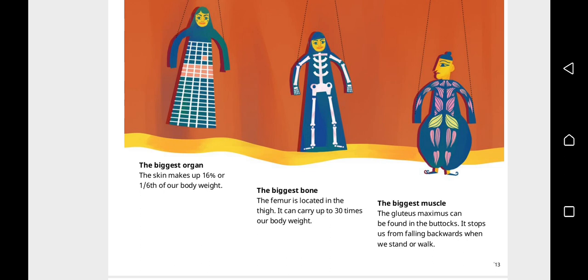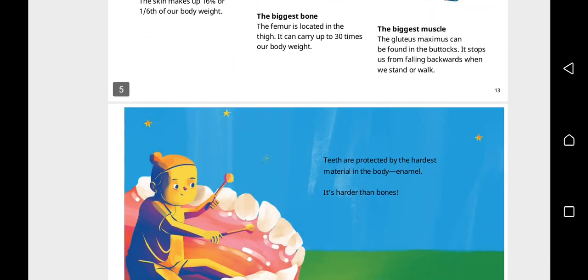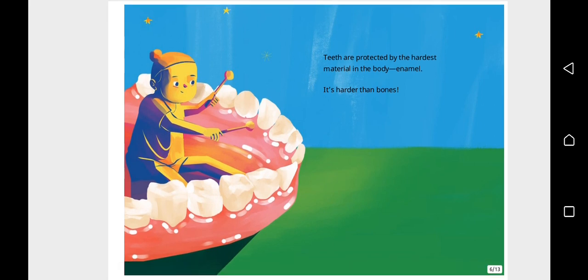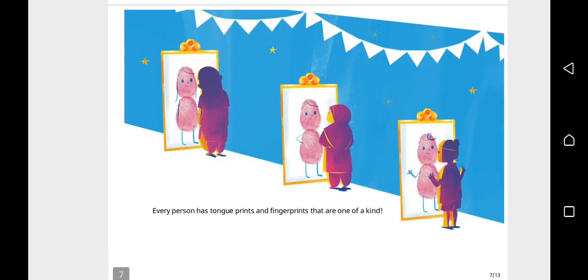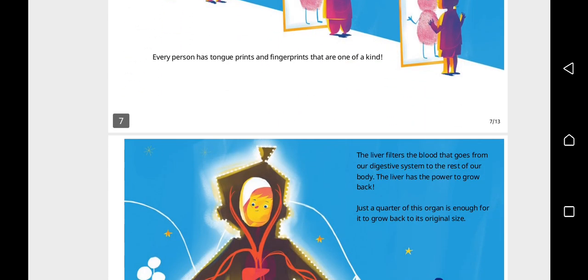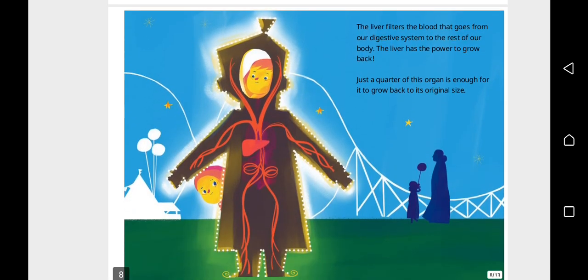Teeth are protected by the hardest material in the body: enamel. It is harder than bones. Every person has tongue prints and fingerprints that are one of a kind.